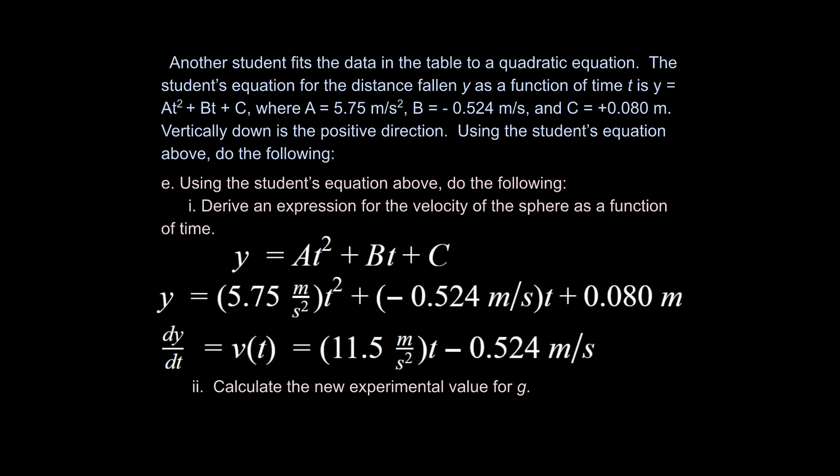And then part 2 of E just says calculate the new experimental value for g. Alright, so we're talking about an acceleration here. And if we look at this equation right here, there are multiple ways to do this. But by far the easiest one is just to take a second derivative of what we worked with already, or a derivative of our velocity with respect to time. And if we do that we just say our acceleration with respect to time is going to be 11.5 meters per second squared. So that's our answer for E2.